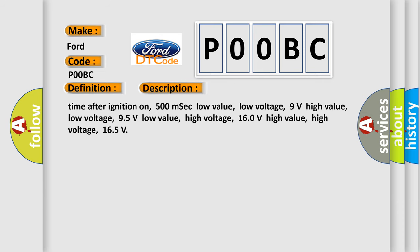Time after ignition on 500 milliseconds. Low value, low voltage, 9 volts. High value, low voltage, 9.5 volts. Low value, high voltage, 16.0 volts. High value, high voltage, 16.5 volts.